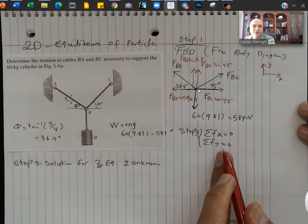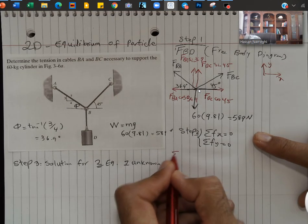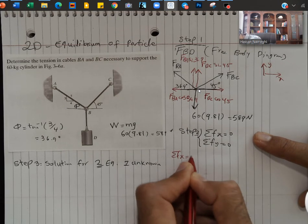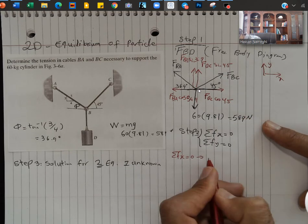So in step 2, I want to set up the equation. So for Fx, I'm going to say that sum of Fx is equal to 0. On the X, I have one FBC.